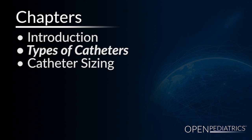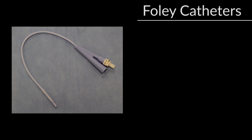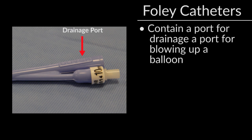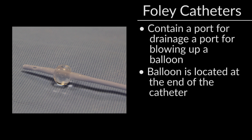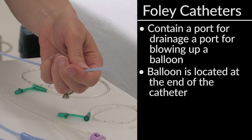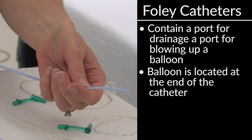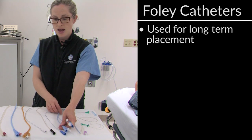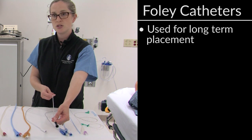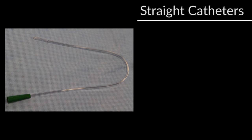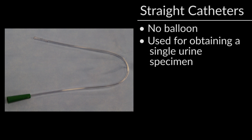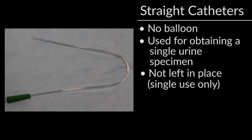Types of catheters. There are many types of urinary catheters to choose from. Foley catheters contain a port for drainage as well as a port used to blow up a balloon. The balloon itself is located on the end of the catheter. When a balloon is inflated, it will look as such. If you're going to leave the catheter in place, please choose one with a balloon, as opposed to the mentor or straight catheter, which is used for single use only. Straight catheters are catheters without balloons, such as this one. These are typically used for obtaining a single urine specimen and are not left in place.